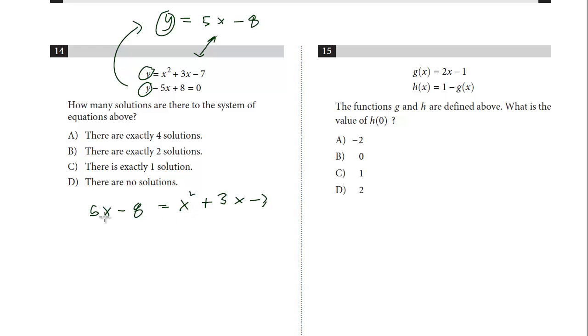So we're going to keep it on this side and I'm going to subtract 5x. And so I get x squared, get minus 2x. I'm going to add 8 and this is negative 3.